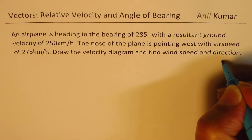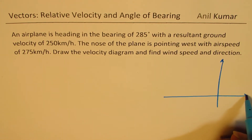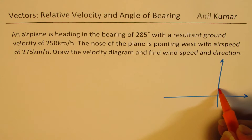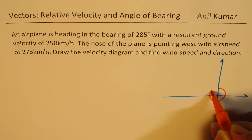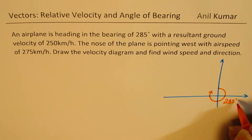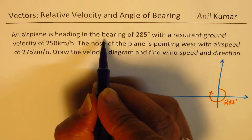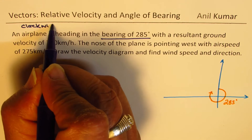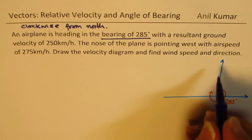Let's sketch the diagram. A velocity diagram means we have to display the velocity. We are given the bearing angle of 285 degrees — that is 285 measured from north, clockwise. So the bearing angle of 285 means clockwise from north, and this is north for us.